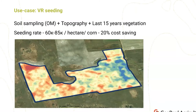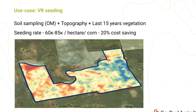Variable rate seeding is a very interesting topic. There are various approaches to creating variable rate application maps. One approach is to use multi-layer analysis — figuring out which data layers are most important for a specific field, selecting and analyzing those layers. This helps you create a digital twin of your field that reflects all possible data layers. In one example, for a corn application, savings on seeds were about 20%.